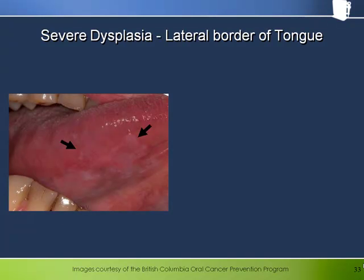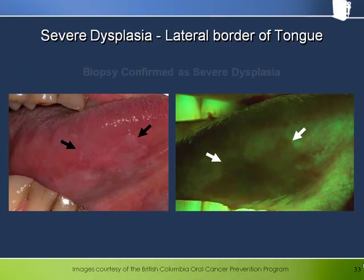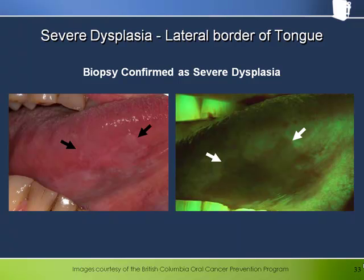Here we see another example of a leukoplakic patch, somewhat more subtle and easier to miss than in the previous example, that again is predominantly dark under Velscope despite the surface keratin. Notice the irregular and well-delineated border thrown into higher contrast with fluorescence — it would be hard to ignore this. This area was biopsy confirmed as severe dysplasia.